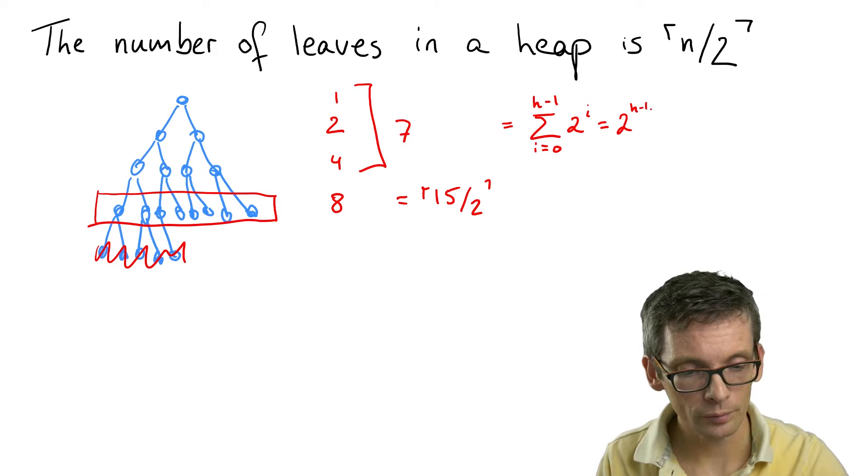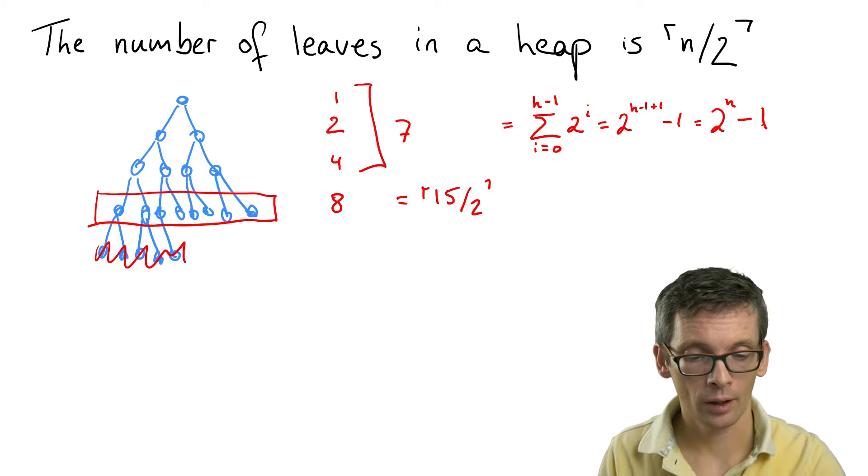and that gives us two to the, and then h minus one plus one, minus one, which is simply two to the h minus one.